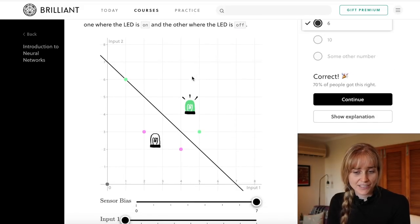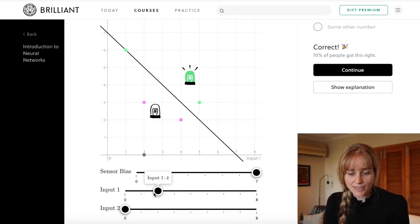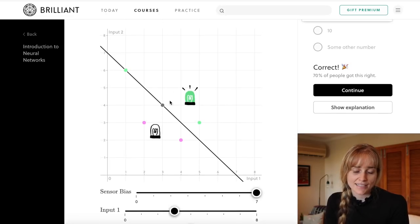We could check it graphically. It just means that our combination of inputs is putting us up here in the green region that turns the LED on. You see we have an input of three and an input of four. We're actually on that bias line there.